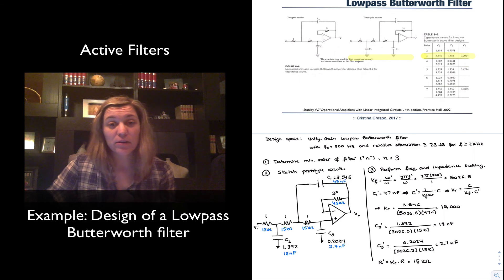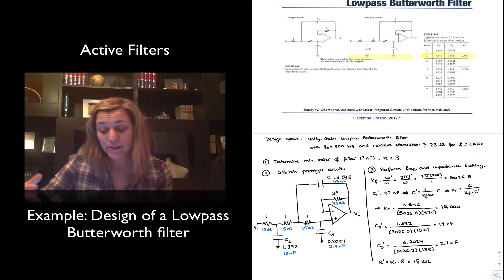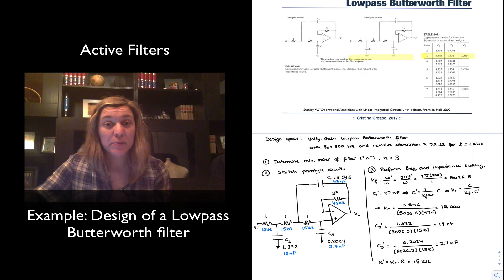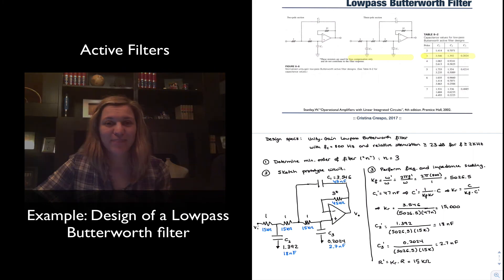So hopefully now you have clear how to use the tables and the Unity Gain normalized section circuits to design any Unity Gain low-pass or high-pass Butterworth filter. For the high-pass section it will be exactly the same process except with the high-pass sections and the high-pass table. Thank you.